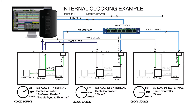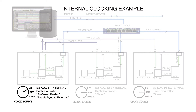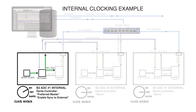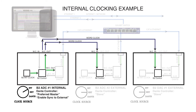Figure 12 on page 13 shows an internal clocking example. Here you can see B2 ADC number 1 is set to internal, with the B2 internal clock sending clock to the B2 control. From the B2 control, word clock is sent to word clock out and to the Dante card. In this example, B2 ADC number 1 is sending clock via B and C cables to both other units, B2 ADC number 2 and B2 DAC number 1, which are both set to external.